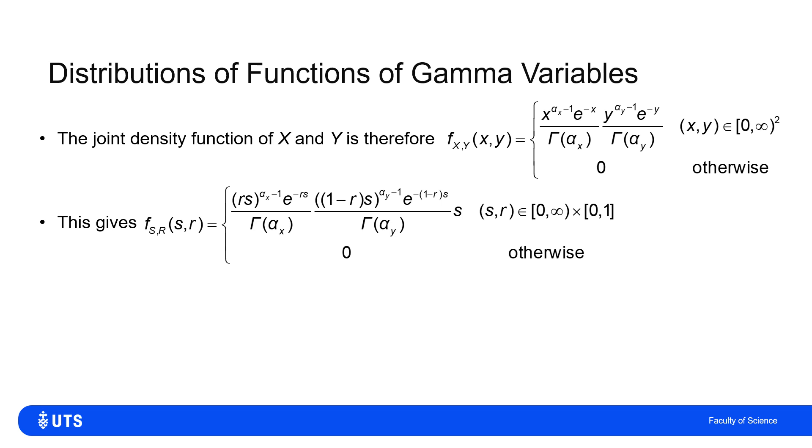The thing to note here is that X over X plus Y has to be between zero and one because X and Y are both positive, but X can't be bigger than X plus Y.